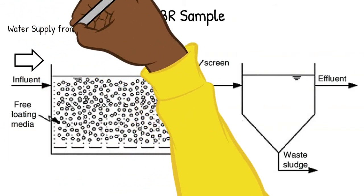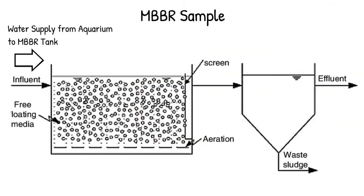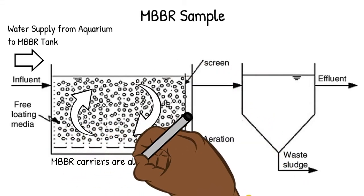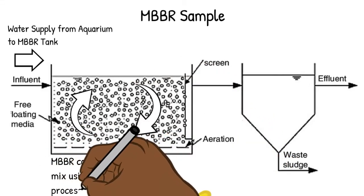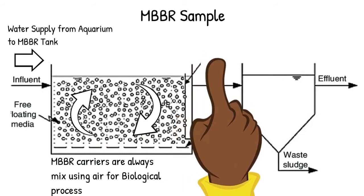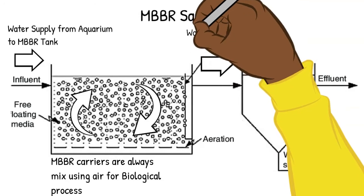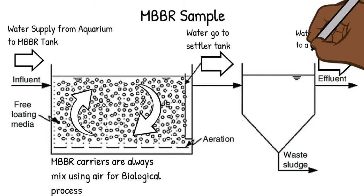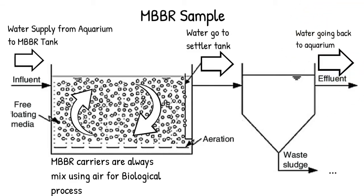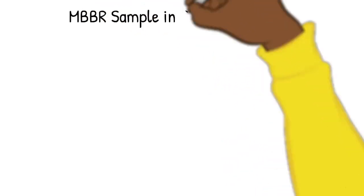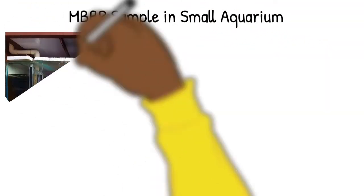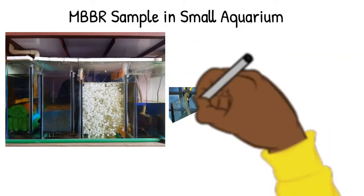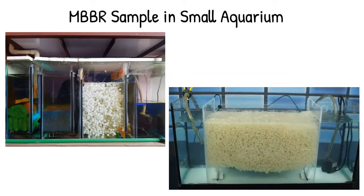Water from your aquarium goes to the MBBR tank, where the carriers are continuously mixed by aeration. After that, the water goes to a settling tank and then flows back to the aquarium or culture tank. In smaller aquariums, the MBBR carriers appear as white pieces — as visible in the sample photos.